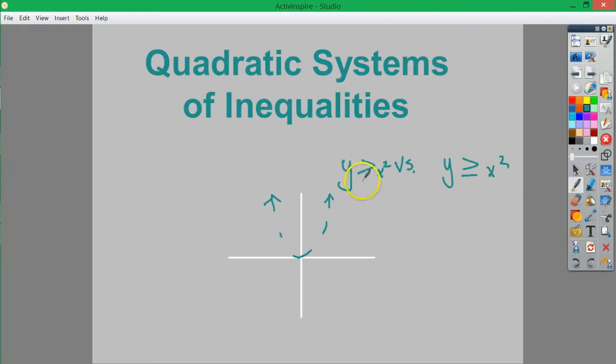And if it's a greater than or less than, you want to use a dotted line instead, just to indicate that this is a boundary, but these points, this point right here is not included. But this, since it's a greater than question, would shade up. So this point's not in, this one is. That's the difference between those two things.